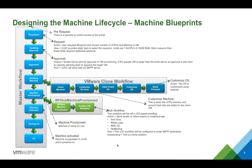Once the clone workflow is finished, we move on to the machine provision state. We then have a stub workflow — a standard stub workflow calling out to VCO — to perform a number of activities. For this customer, we were installing antivirus, populating the virtual machine in BladeLogic, installing two different types of BMC agents, and integrating NetBackup. VCO workflows will be configured to email to an SMTP destination. We wanted to integrate with some of these products over an API, but unfortunately the customer's budget didn't allow us to do this for this exact example. So we sent an email form to their ops team.